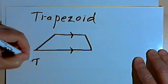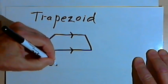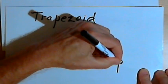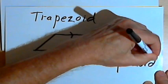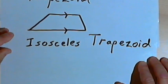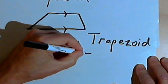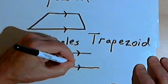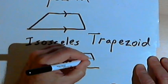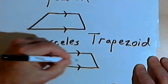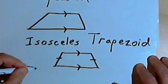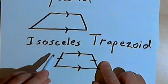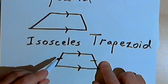Now there's a specific kind of trapezoid called an isosceles trapezoid. What makes an isosceles trapezoid special is that besides those two sides being parallel, the other two sides have to be the same length. So we've got two sides that are parallel and two sides that are the same length, and because of that we get a couple of interesting properties.